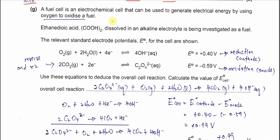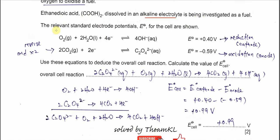Part G: A fuel cell is an electrochemical cell that can be used to generate electricity. Ethanedioic acid dissolved in alkaline electrolyte is being investigated as a fuel. We're given two standard electrode potentials: one for oxygen to form hydroxide, and CO2 to form this anion. From these two electrode potentials, we should know which one is cathode and anode. This one is more positive, so it will stay as a reduction form, gaining electrons at the cathode. This one is more negative, so it releases electrons at the anode. This equation needs to be reversed.